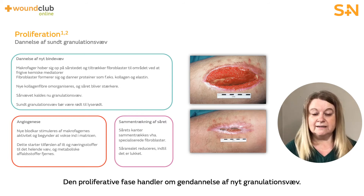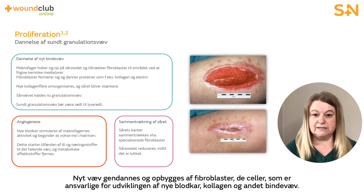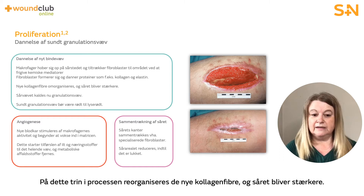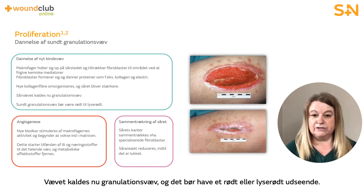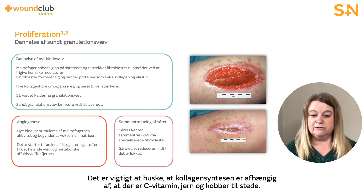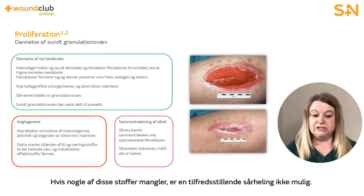The proliferative phase is about rebuilding new granulation tissue. New tissue is regenerated and constructed by fibroblasts — the cells responsible for the development of new blood vessels, collagen and other connective tissue. It is at this stage that new collagen fibres start to reorganise and the strength of the wound increases. The tissue is now referred to as granulation tissue and should be red to pink in appearance. It is important to remember that collagen synthesis is dependent on the presence of vitamin C, iron and copper. If there is a deficiency of these substances, satisfactory wound healing is not possible.